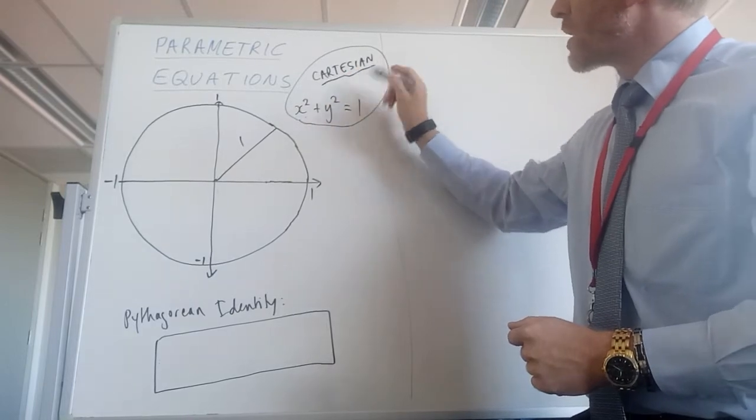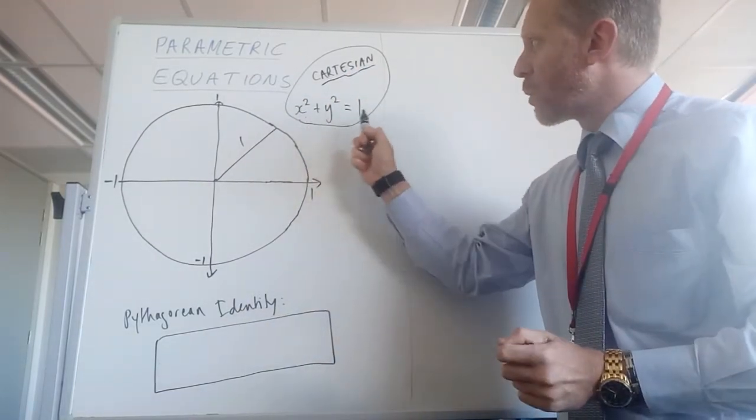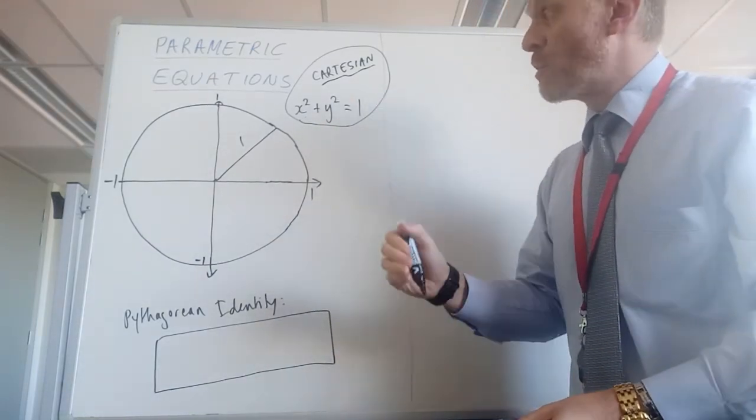The Cartesian equation of that circle, as you would already know, is x squared plus y squared equals 1, and so that's familiar.